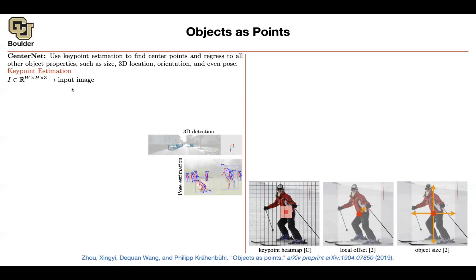Key point estimation. You have an image. You push it through your convolutional neural network. And then you're going to do a prediction. It's per pixel prediction. But after a bunch of convolution, you're going to lose some resolution based on your total stride.